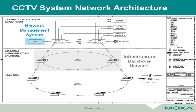Over here, we have the backbone network comprised of several Ethernet switches. Finally, this is the field side network with several N devices, such as a CCTV camera, wireless AP, and other N devices.